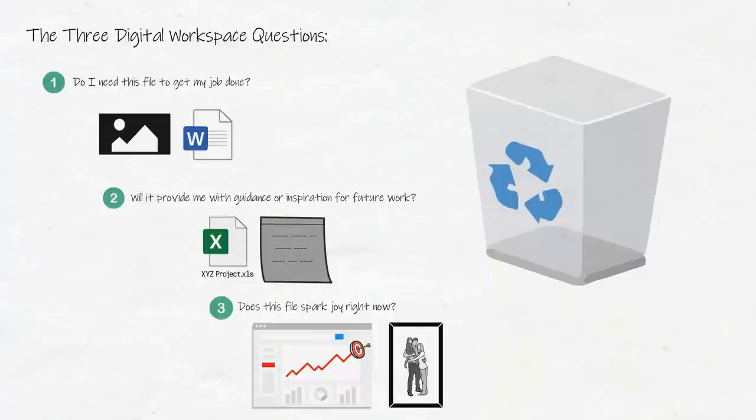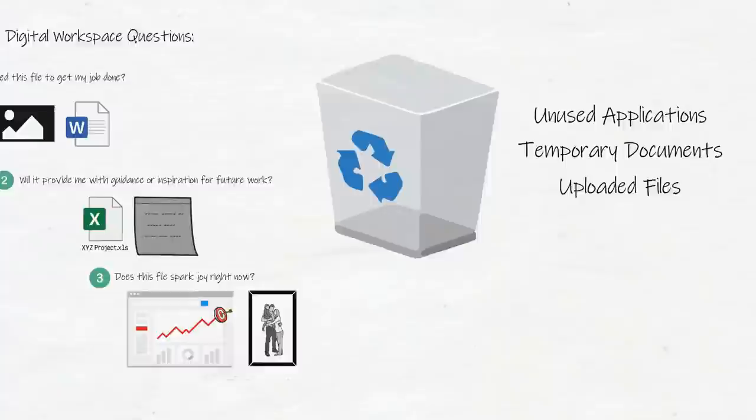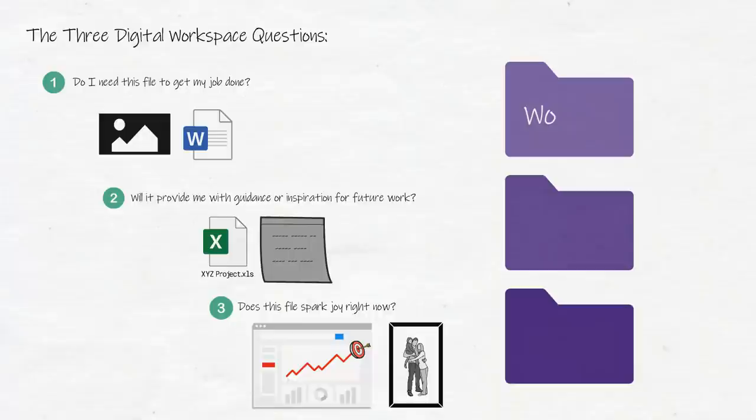After asking these three questions, what often gets removed and sent to the trash bin are applications I thought would be helpful but I never use, documents that were saved to my desktop because it was an easy place to save them but are no longer needed, or photos that I've uploaded to social media or attached to an email that I can find in the cloud if I ever need them. After purging most of the items on my desktop, I take the remaining items and move them into one of three folders off my desktop: Working, Records, and Archive.